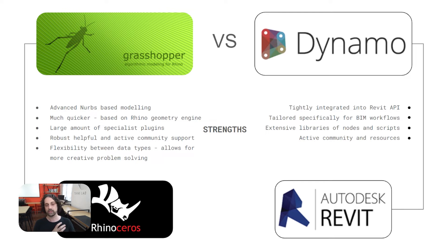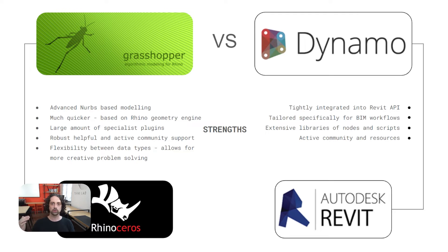Dynamo, on the other hand, is very tightly integrated into the Revit API. It's specifically tailored for BIM workflows and has extensive libraries of nodes and scripts to automate a lot of repetitive tasks that architects and designers have to do in Revit.